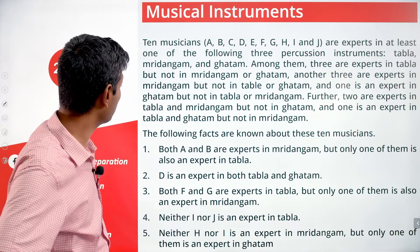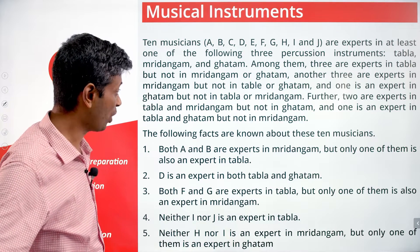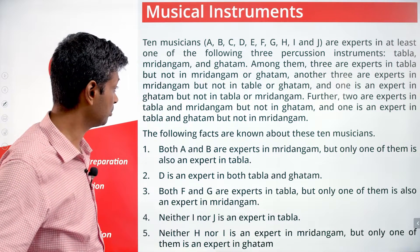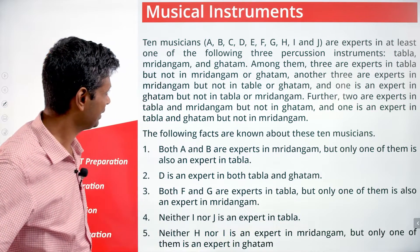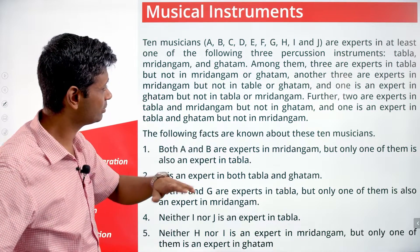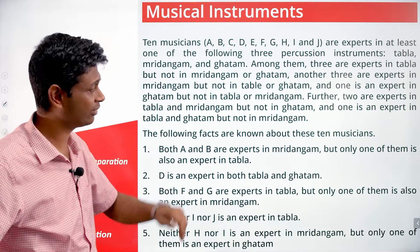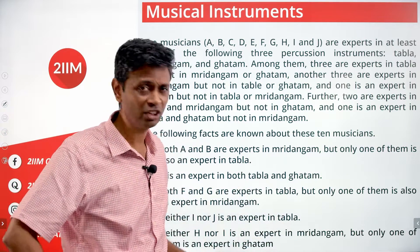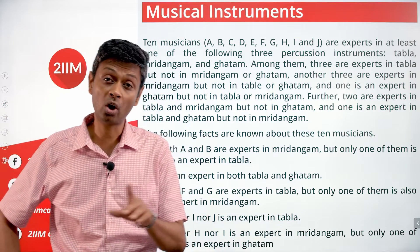Further, two are experts in Tabla and Mridhangam but not in Ghatam. One is an expert in Tabla and Ghatam but not in Mridhangam. Counting: three, three, one, two, one — that's ten. We've accounted for all ten, which means nobody is an expert in all three.